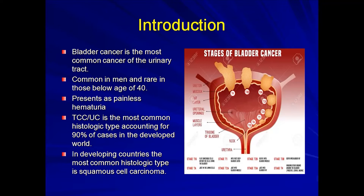Patients normally present with painless hematuria and sometimes with urine retention, and we'll get to understand why that is so. The transitional cell carcinoma, also known as urothelial carcinoma, is the most common histologic type in the developed world, whilst squamous cell carcinoma is more common in developing countries.